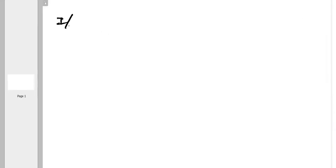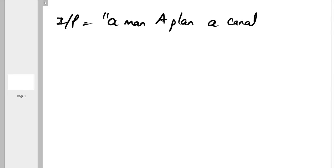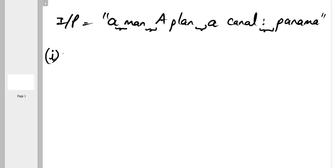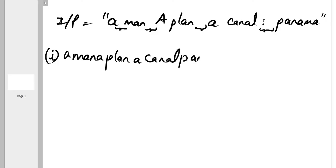Let's take the same input string: 'a man a plan a canal Panama'. The first step is to remove all spaces and non-alphanumeric characters, giving us 'amanaplanacanalpanama', and convert it to lowercase. There are two ways to solve this: reverse the whole string and check if it equals the original, or use a two-pointer approach.